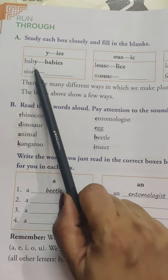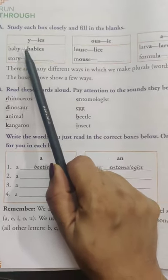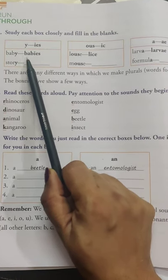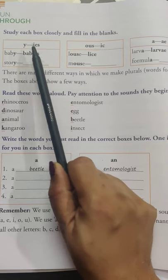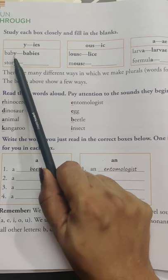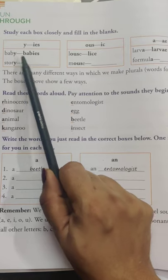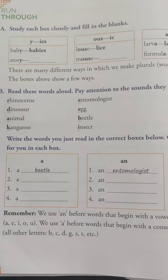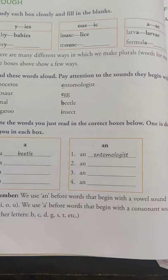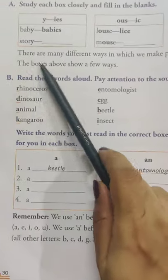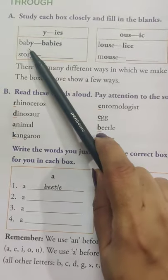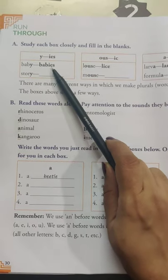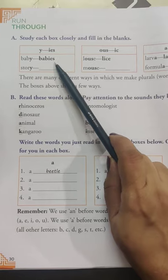Look at the next example here. B-A-B-Y — baby ends in Y. What's the plural? The plural is B-A-B-I-E-S. Can you see? The singular word ending in Y changes to the plural word ending in IES. So B-A-B-Y, which ends in Y, the plural form is changed to IES — babies.